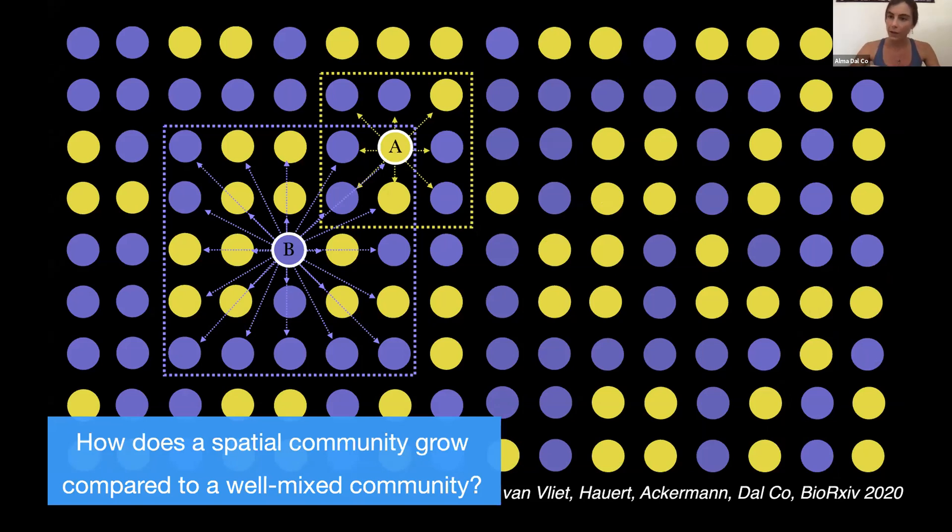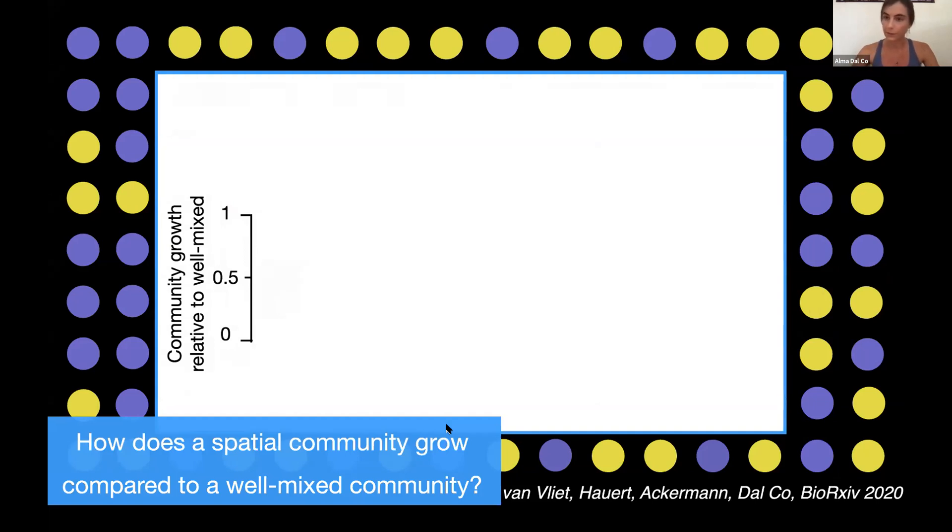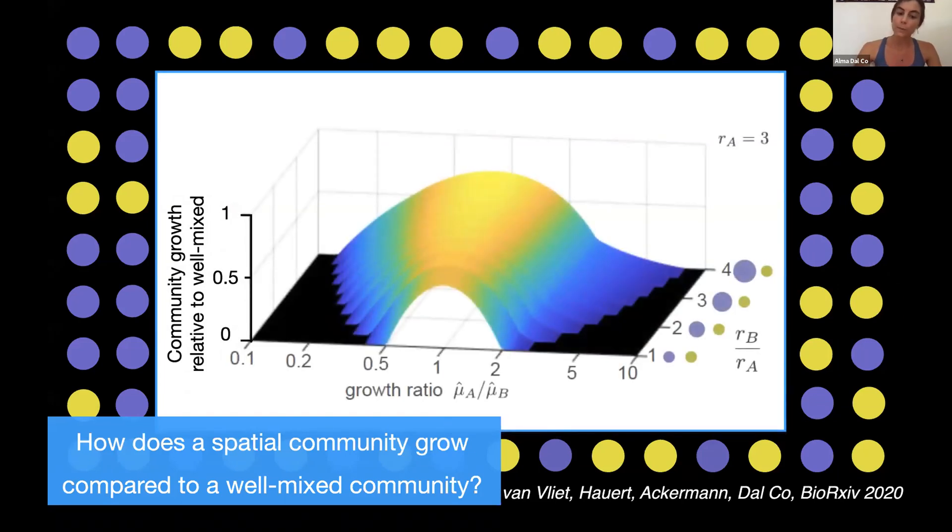We know that the interaction range is a key quantity in those communities. So what happens when we modulate this interaction range and perhaps we make it as large as the whole system? How does the spatial system grow compared to the well-mixed system? Here, I will show you the growth rate of the spatial system compared to the well-mixed system. So here, what we did is that we modulated the ratio between the two maximal growth rates and the ratio between the two interaction range of the two cell types.